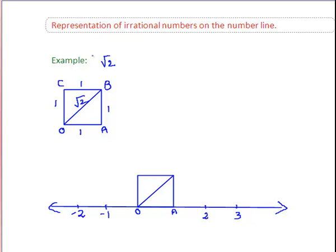Take an example. Represent the irrational number root 2 on the number line. To do this, consider a unit square OABC.